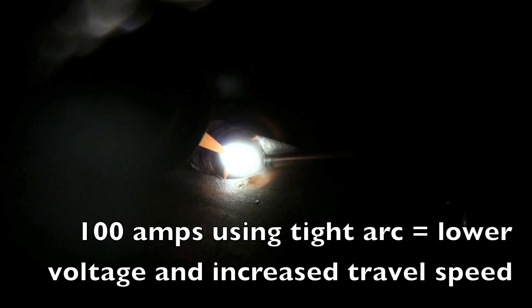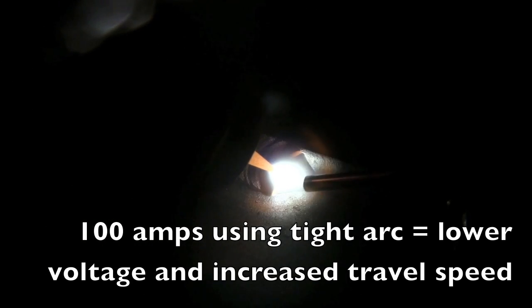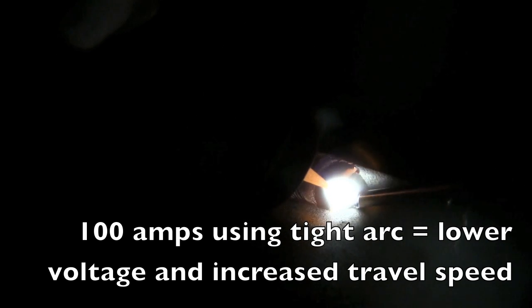Contrast that with the same amperage here. I'm still using 100 amps. I just tightened up the arc. Now everything is going much better and much quicker. It's going more like TIG welding should, and I'm putting less heat into the part, which is usually a good thing.